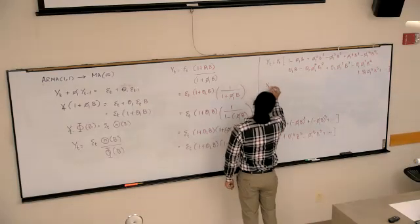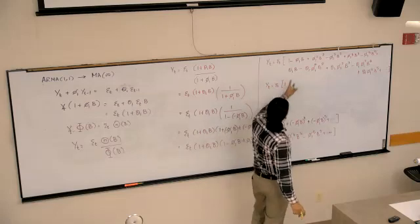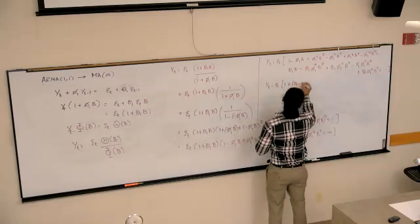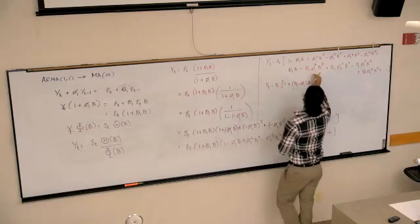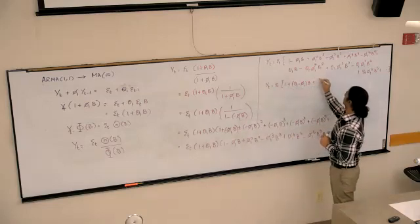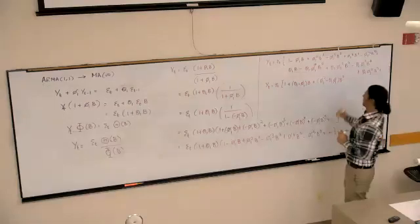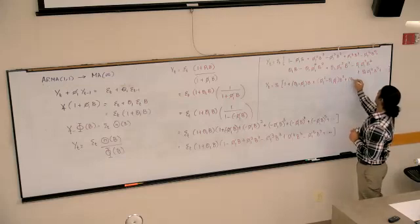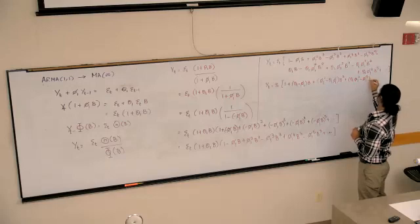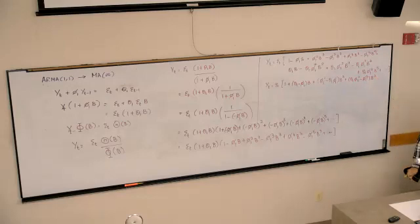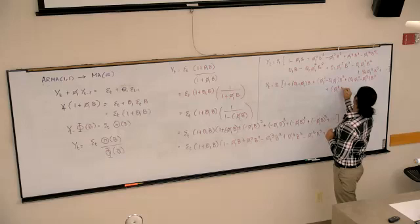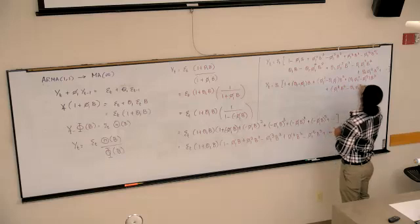Combining like terms: the coefficient of B is (θ₁ minus φ₁). The coefficient of B² is (θ₁φ₁ minus φ₁²). The coefficient of B³ is (θ₁φ₁² minus φ₁³). The coefficient of B⁴ is (φ₁⁴ minus θ₁φ₁³), and for B⁵ it is (θ₁φ₁⁴ minus φ₁⁵).